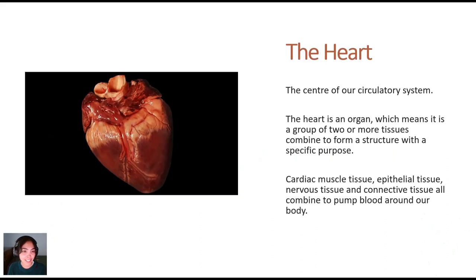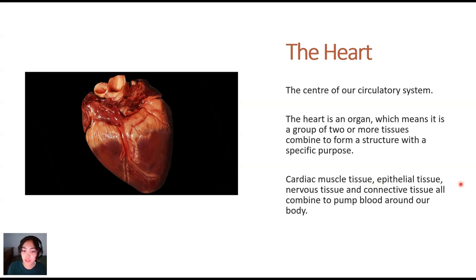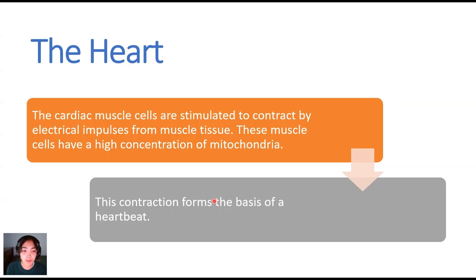The heart, of course, is the centre of our circulatory system. This here is an image of our heart. The heart is an organ, which means it is a group of two or more tissues combined to form a structure with a specific purpose. It's filled with cardiac muscle tissue, epithelial tissue, nervous tissue, and connective tissue — these all combine together to pump the blood around our body.